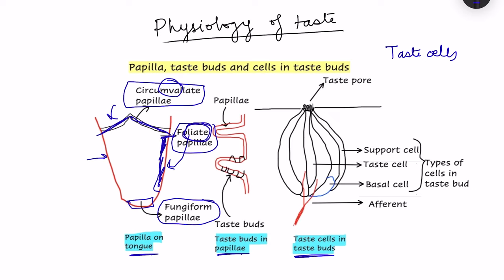Papillae are basically projections on the dorsal surface of the tongue. These papillae have taste buds — you can see these small taste buds on the projections. Different papillae have different numbers of taste buds. Circumvallate papilla has around 100 taste buds each, and foliate papilla also has 100 taste buds. However, each fungiform papilla has only 5 taste buds, so there are fewer taste buds in the fungiform papilla.